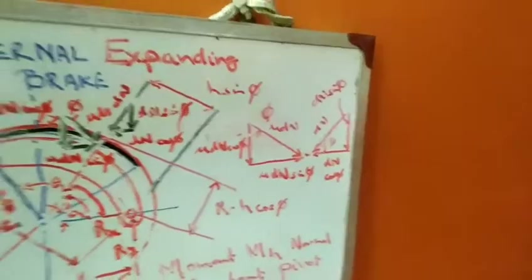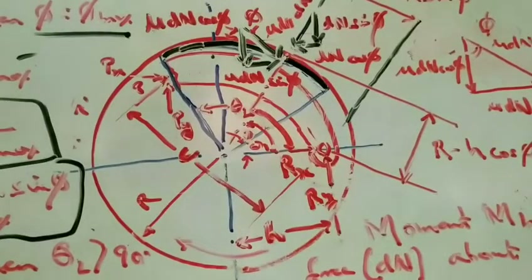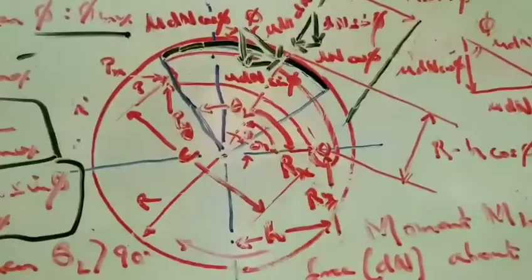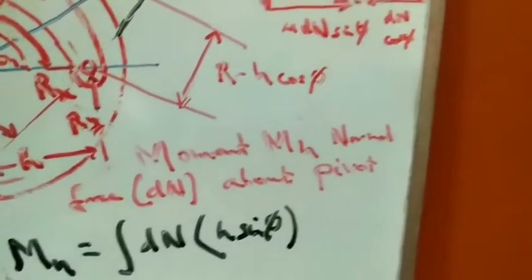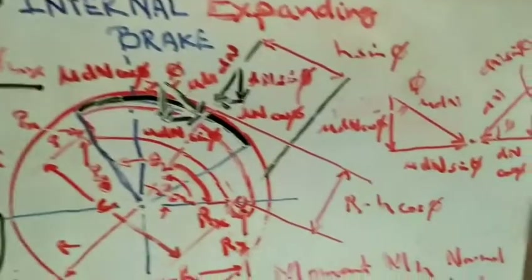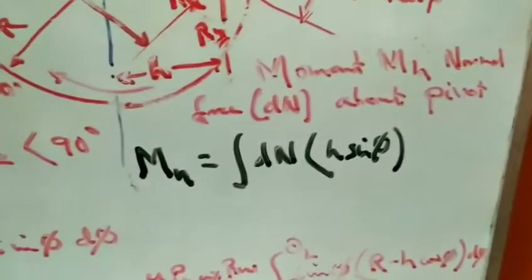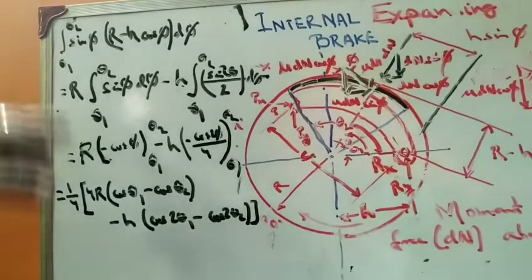The moment caused by the normal force about the pivot: the normal force dn acts perpendicular to the shoe surface, and its perpendicular distance from the pivot is h*sin(phi). Therefore, the moment of normal force Mn equals the integral of dn times h*sin(phi). Substituting the value of dn and integrating from theta_1 to theta_2 gives the moment of the normal force at the pivot.